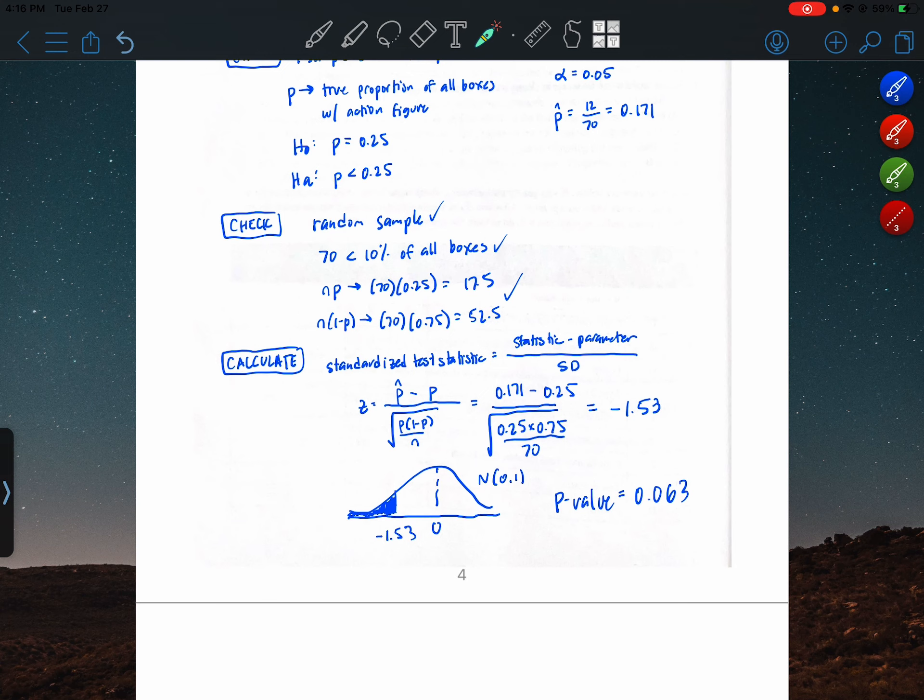Now remember our significance level was 5%. And our p-value is greater than that. So, in other words, the result that these toy collectors got is not statistically significant. And so, they're not going to reject the null hypothesis. They have not found convincing evidence for the alternative.